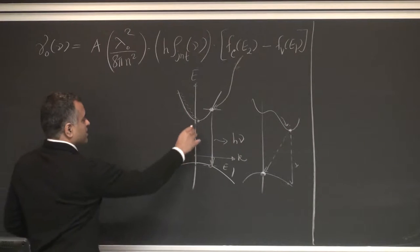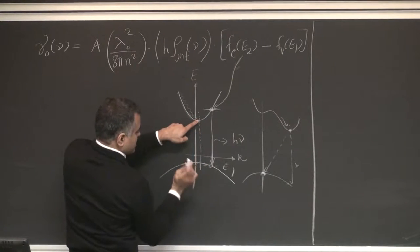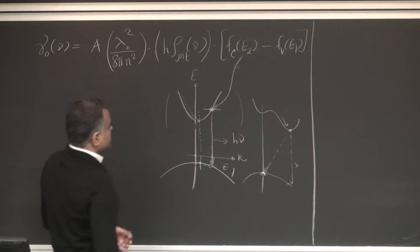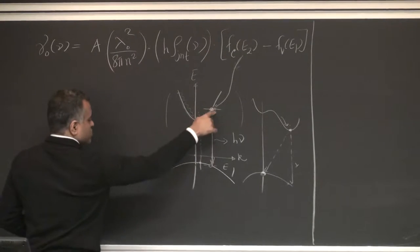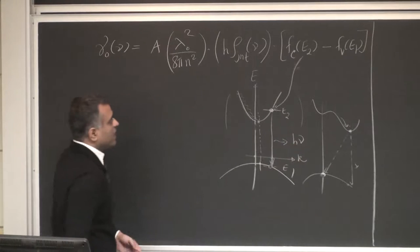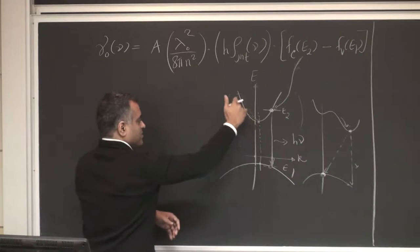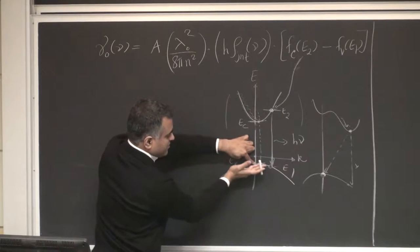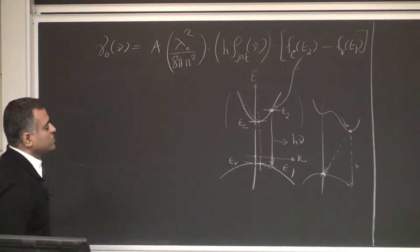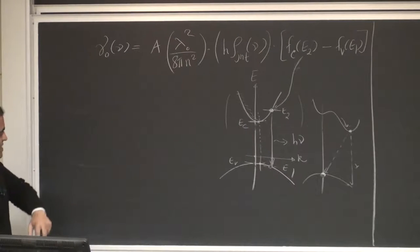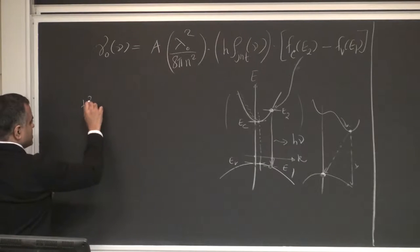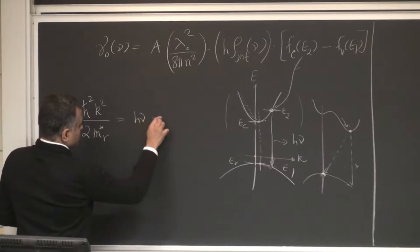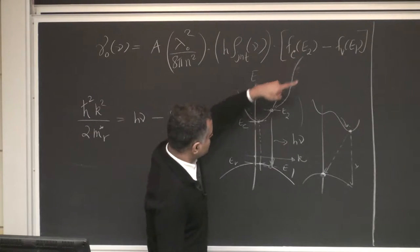Our focus is on direct bandgap semiconductors, where the minimum of the conduction band and the maximum of the valence band are at the same K. For any such transition, E2 minus E1 equals h-nu, and we know E2 goes as h-squared K-squared over twice the effective mass plus EC, and E1 similarly from EV. The sum gives us the photon energy: h-squared K-squared over twice the reduced effective mass equals h-nu minus the bandgap. This is our starting point for analyzing any dimension.